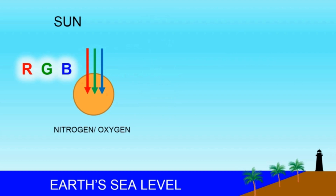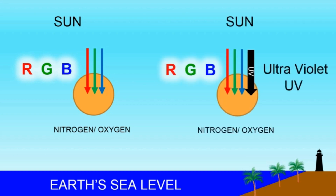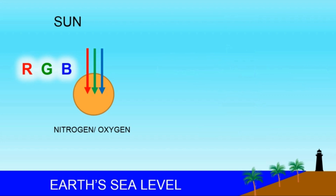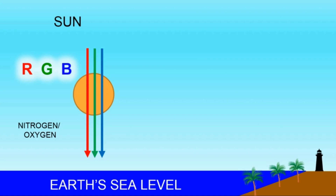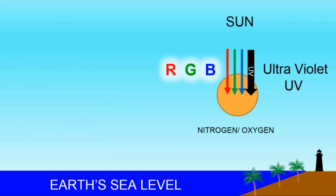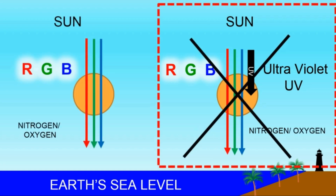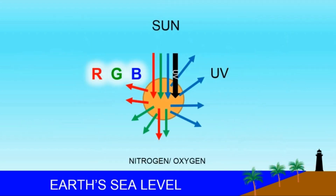Now consider two different cases: one where there's no UV light coming in from the sun, and another where UV light does come in from the sun. In the first case, where there's no UV, RGB would simply pass through nitrogen or oxygen molecules because it's a transparent gas — it just doesn't absorb light. But in the second case, when UV light hits the same nitrogen or oxygen molecule, it starts to behave differently. RGB does not simply pass through the molecules; instead, RGB now gets redirected into random directions, mostly sideways.